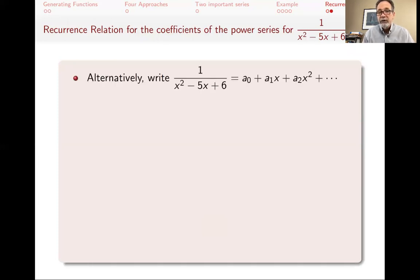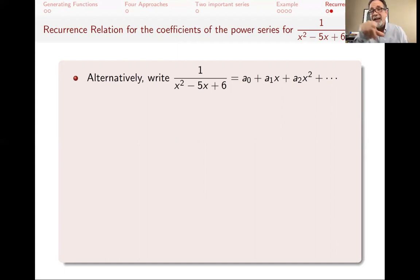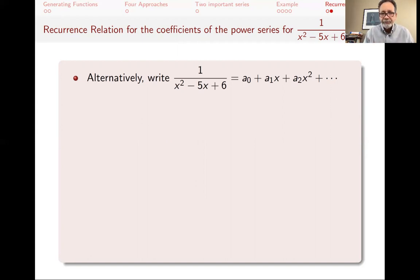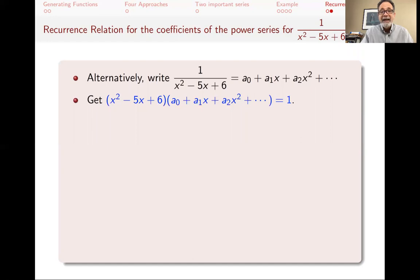For 1/(x²-5x+6), I want to find a recurrence relation. If this equals the power series sum of a_n·x^n, then formally I can cross multiply and get (x²-5x+6) times that power series equals 1. We don't care about radius of convergence — we only care about what the coefficients formally are.